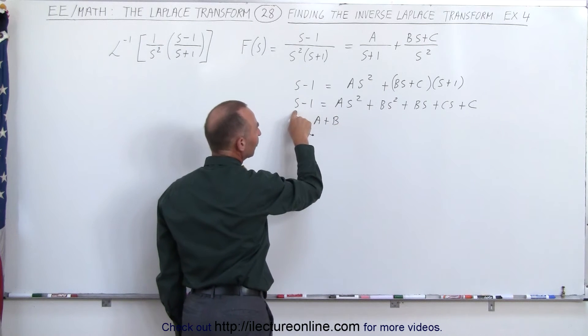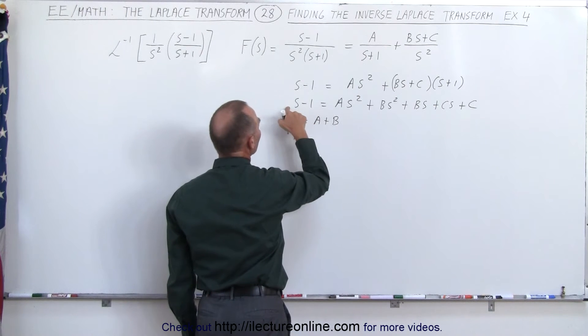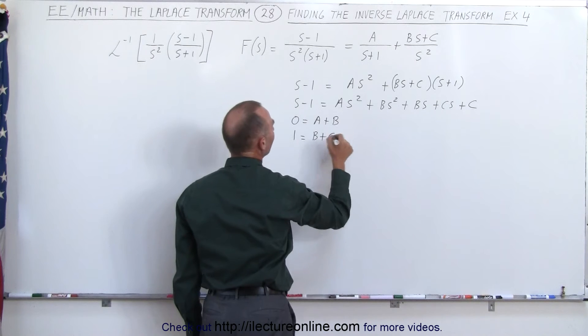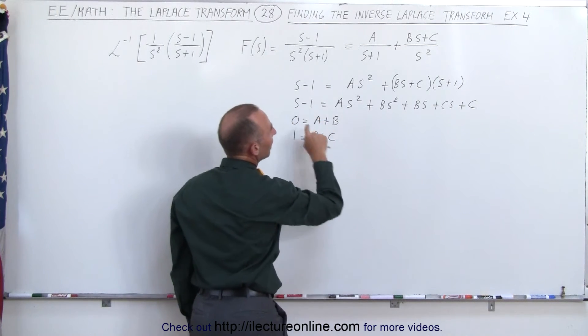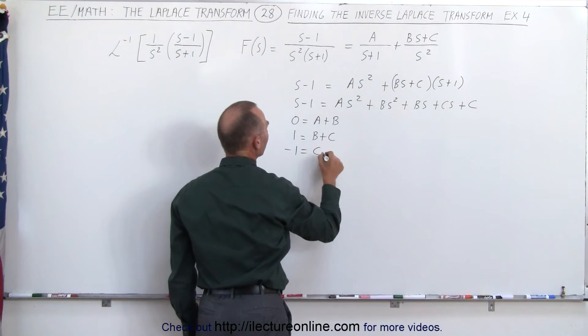We have an s term on the left and we have two of them on the right, which means that one, which is the coefficient of this s term, equals B plus C. And finally we have a negative one here and we have a single constant term, which means minus one equals C.